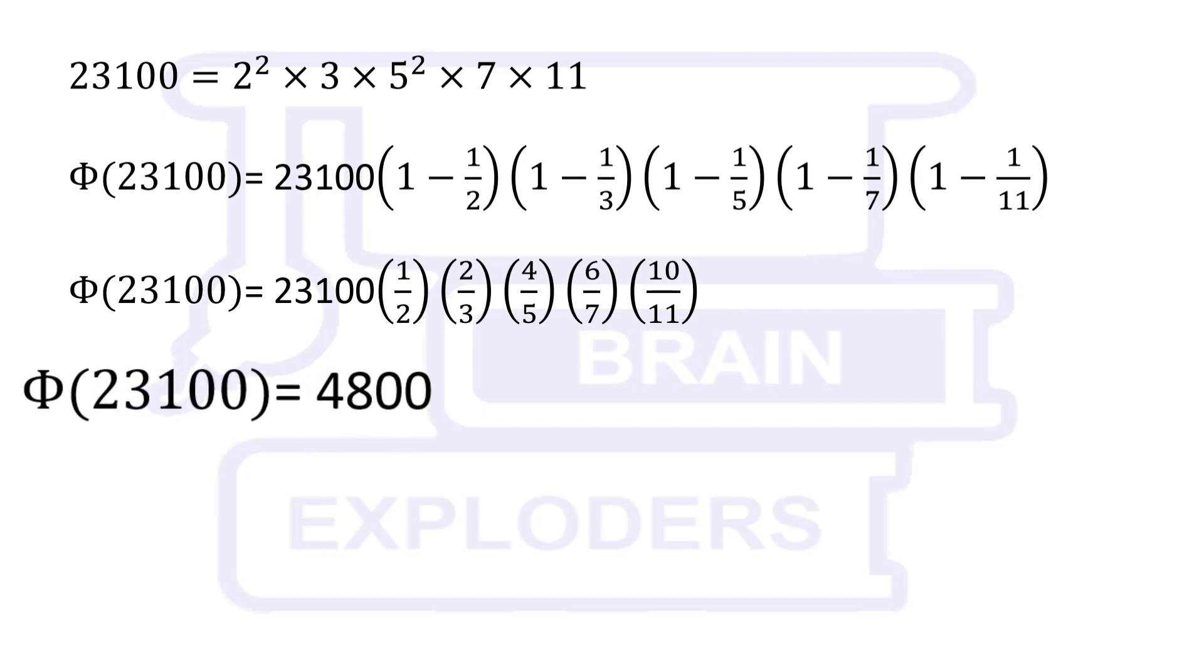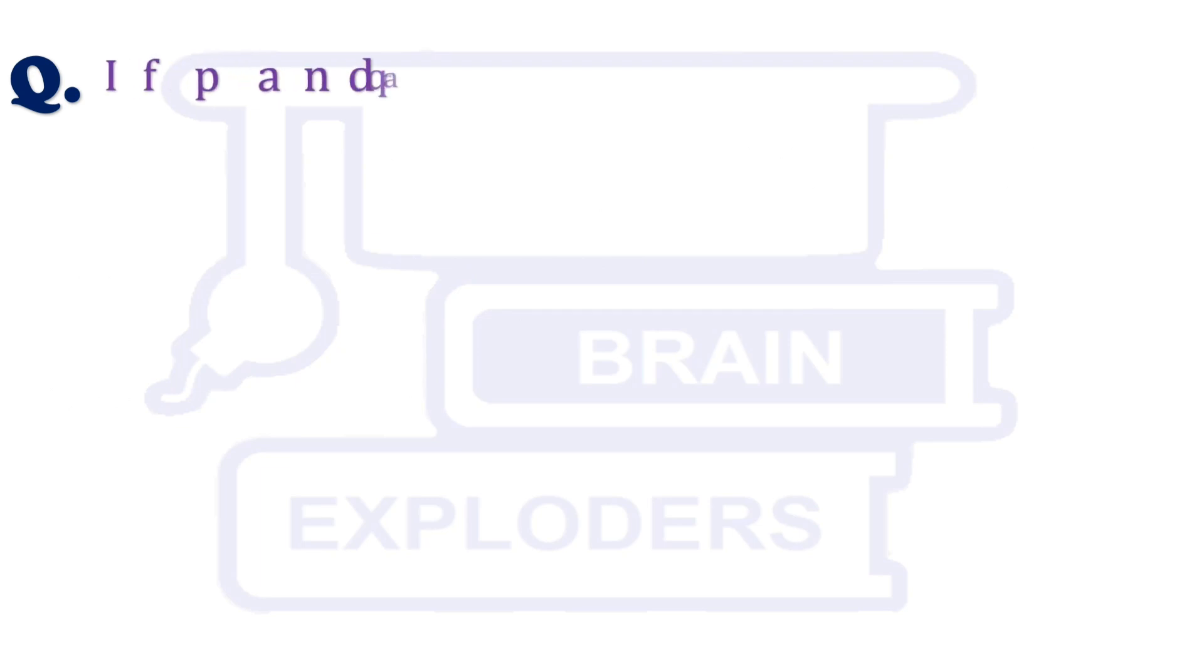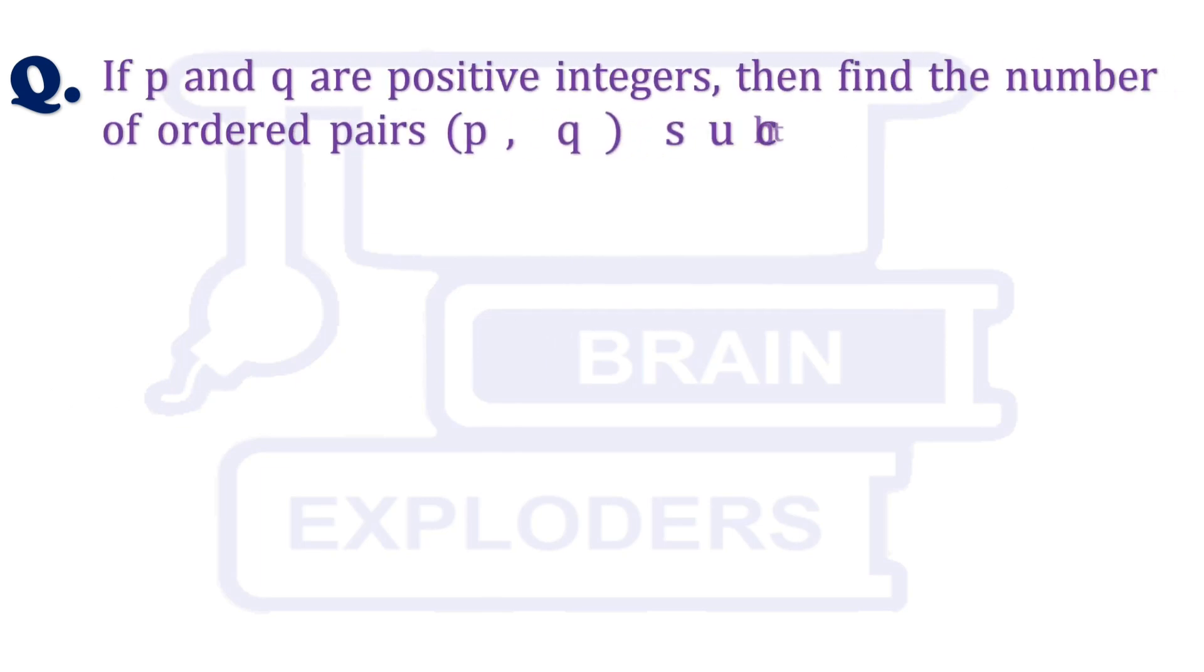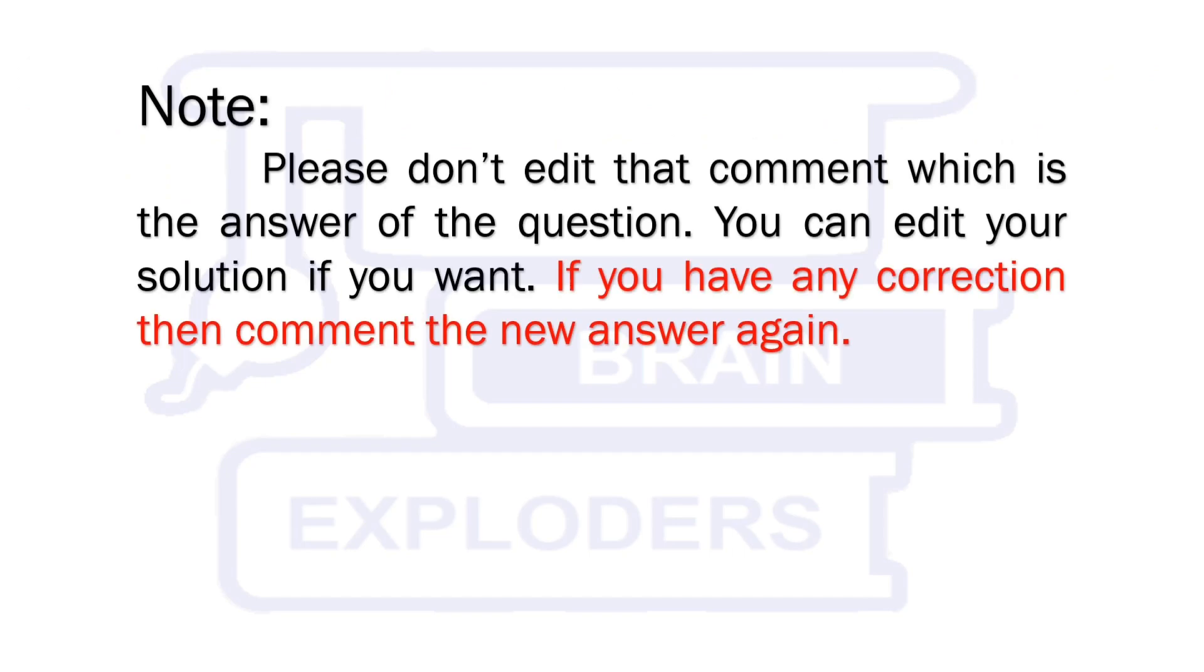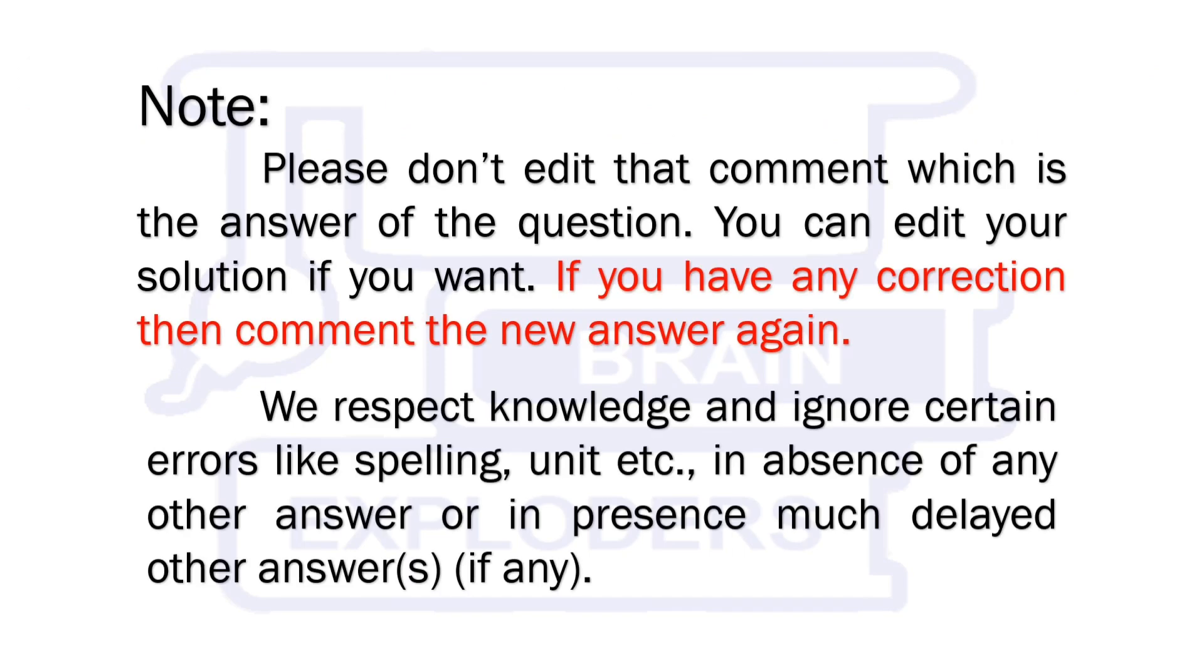Let's move toward another question. If p and q are positive integers, then find the number of ordered pairs (p, q) such that LCM of p and q is 10,800. Try this question and comment us the solution, and if you have any question like this, then please share with us.